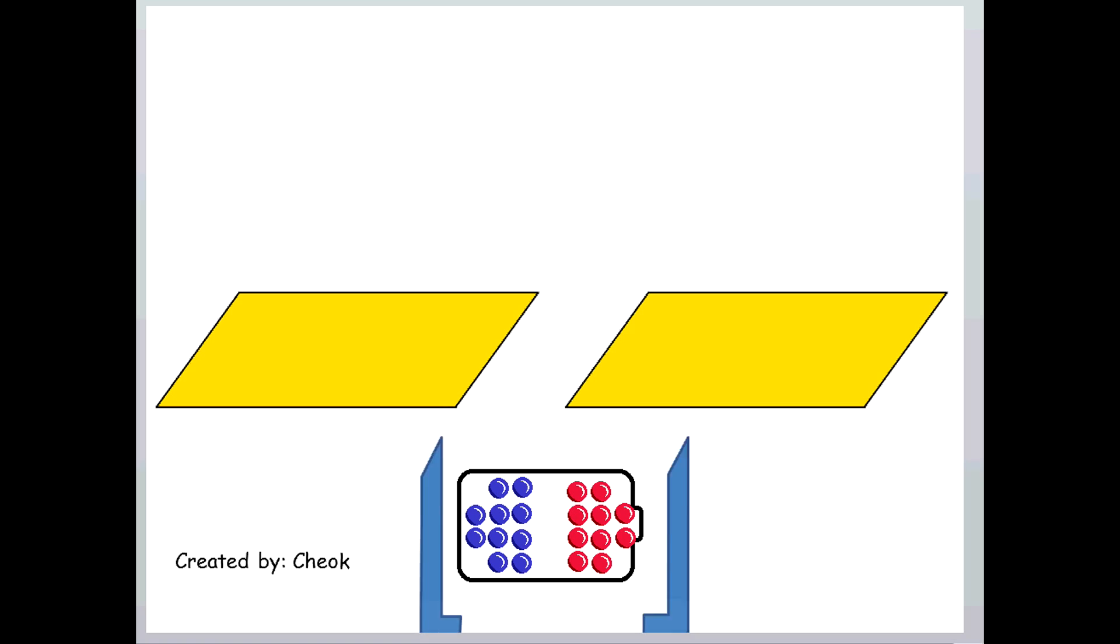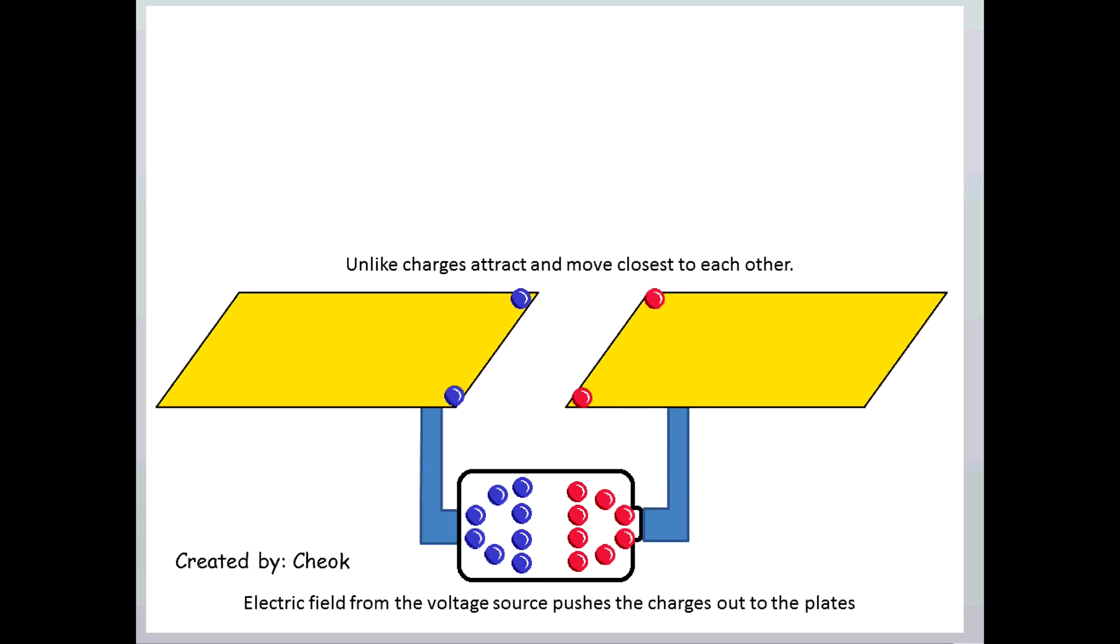So let's look at the physics on how an ungrounded object influences capacitance. When conductors are connected to the source, the electric field from the source pushes the charges out to the conductors. The positive charge and the negative charge are attractive, so they move to each other as close as possible.